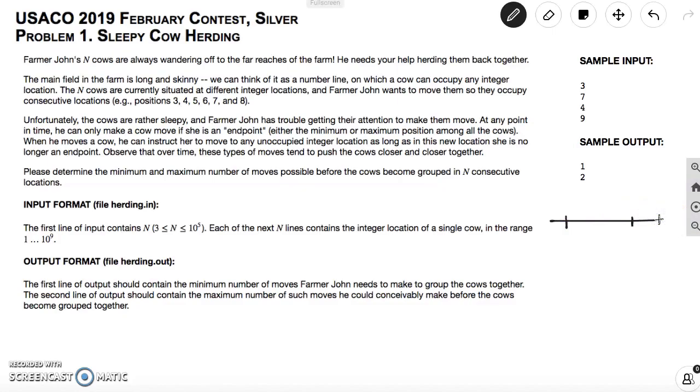The N cows are currently situated at different integer locations, and Farmer John wants to move them so they occupy consecutive locations, e.g., positions 3, 4, 5, 6, 7, 8. So you want to move them such that they're all grouped together.